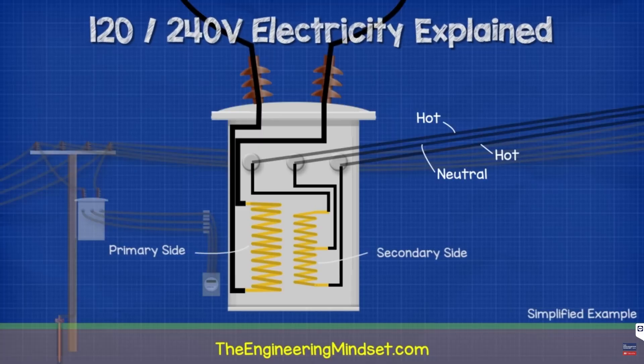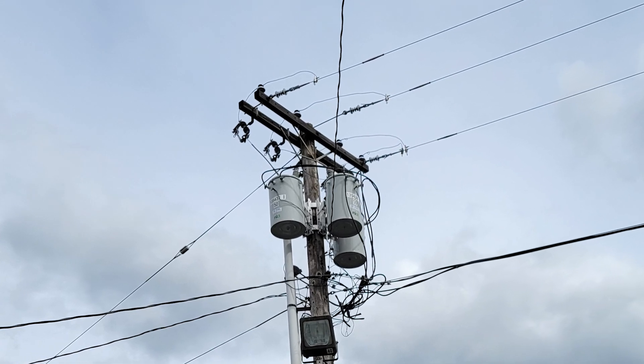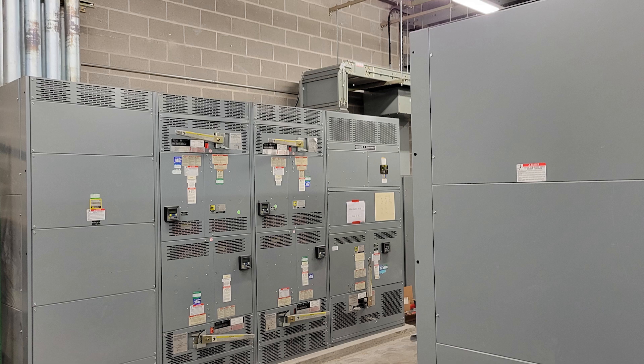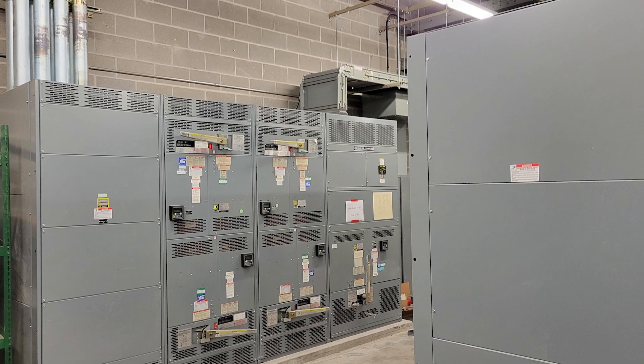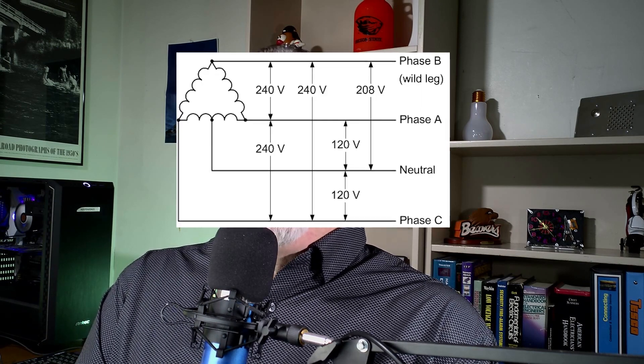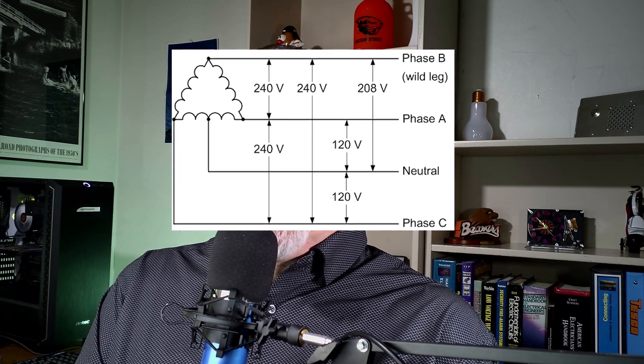We design all kinds of alternating current systems with different characteristics — everything from a 120/240-volt split-phase system in an American house, to a 208Y/120-volt three-phase four-wire system in a commercial building, a 480Y/277-volt three-phase four-wire system in a large commercial or industrial building, and even older systems like a 120/240 three-phase four-wire delta with split-phase, or a 480-volt three-phase three-wire corner-grounded delta.